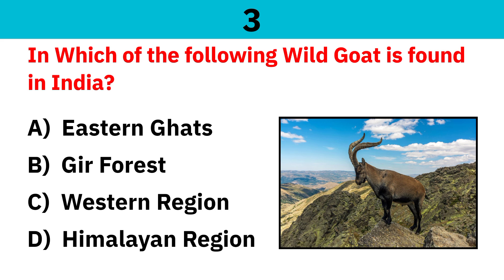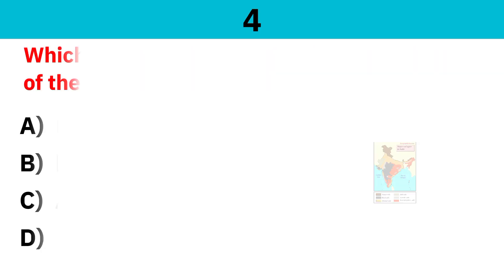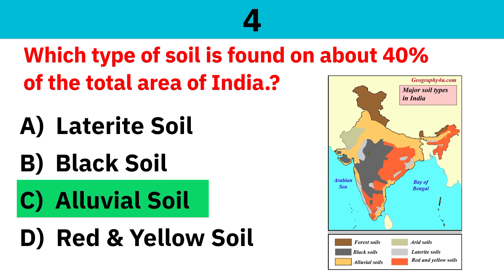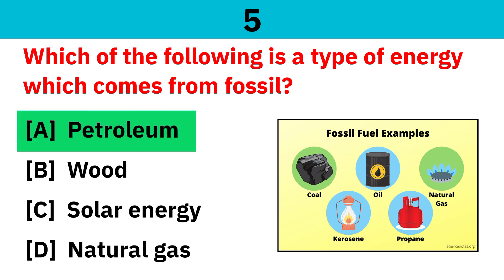In which region is the wild goat found in India? Correct answer is the Himalayan region. Which type of soil is found on about 40% of the total area of India? Correct answer is alluvial soil. Which of the following is a type of energy which comes from fossil fuels? Correct answer is petroleum.